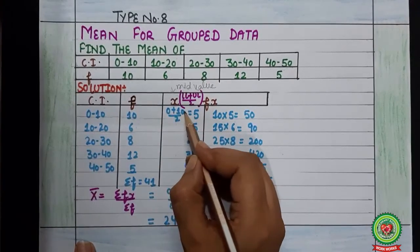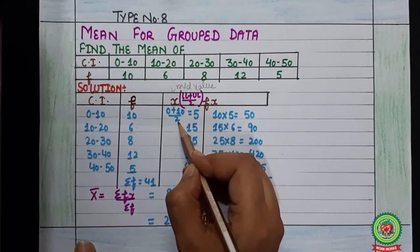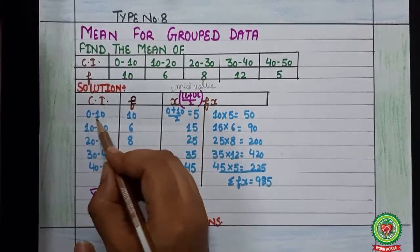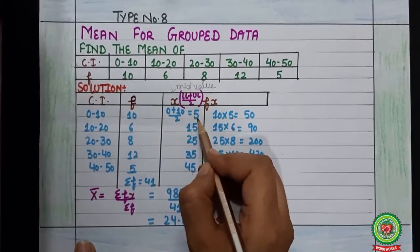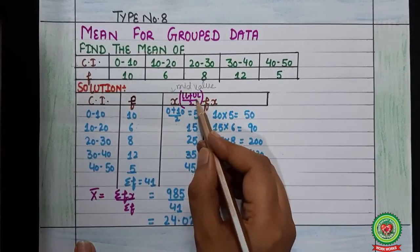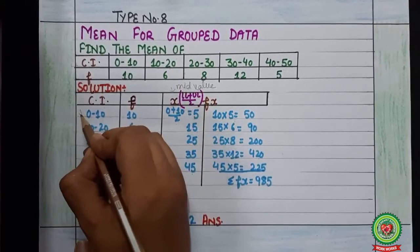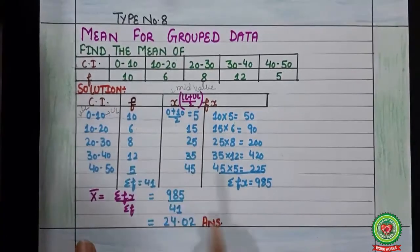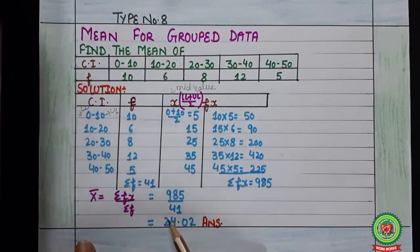So here class interval is 0 till 10. We will add these both and divide it by 2. 0 plus 10, that is 10 divided by 2, it will become 5. So mid value of first class interval is 5. Therefore the formula of mid value is lower limit plus upper limit upon 2. This is the lower limit and this is the upper limit.